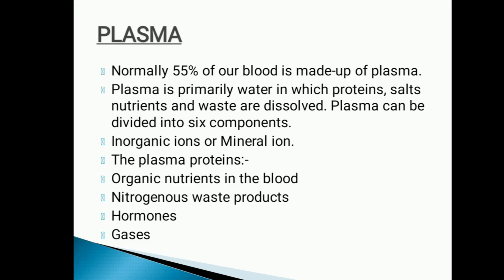Plasma proteins include albumin and globulin. Plasma lipids comprise cholesterol, triglycerides, and phospholipids. The remaining percentage is occupied by inorganic substances and gases. The inorganic substances include acids, cations, and anions such as Na⁺ ions, K⁺ ions, chlorides, bicarbonates, phosphates, and so on.